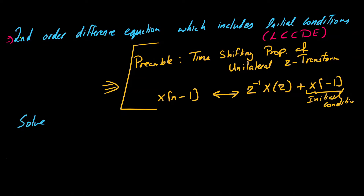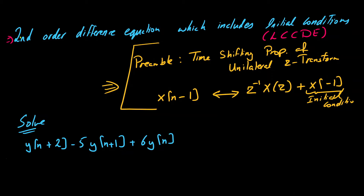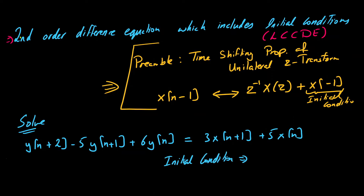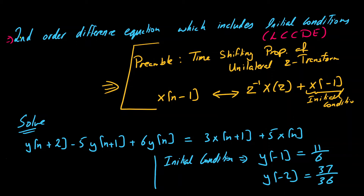Now we are asked to solve the following difference equation: Y of N plus 2 minus 5 Y of N plus 1 plus 6 Y of N equals 3 X of N plus 1 plus 5 X of N. We are given initial conditions: Y of minus 1 equals 11/6 and Y of minus 2 equals 37/36. The input X of N is simply 2 raised to the power minus N times U of N.